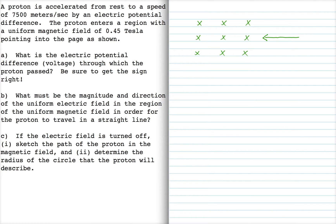Okay, so the arrow here represents the proton's motion. It starts with an initial velocity of zero, and when it's done accelerating, it has a velocity of 7,500 meters per second when it enters this magnetic field.